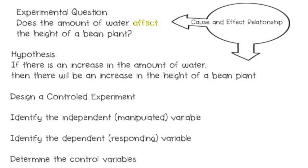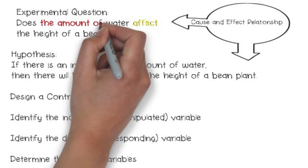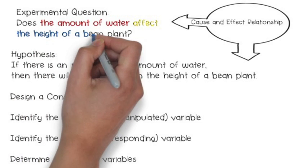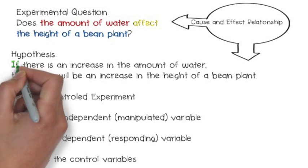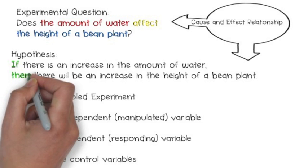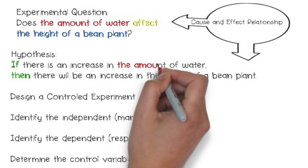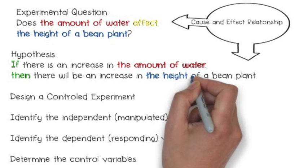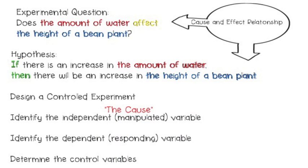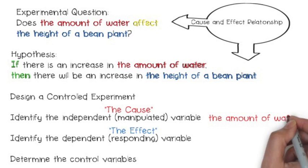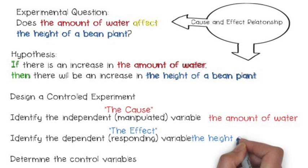The cause was the amount of water, and the effect was the height of a bean plant. In our hypothesis, the if-then statement reads: if there is a change in the amount of water, then there will be a change in the height of a bean plant. So, the independent variable is the amount of water — it nicknames the cause — and the dependent variable is the height of a bean plant, which nicknames the effect.